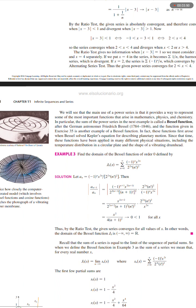Named after the German astronomer Friedrich Bessel (1784-1846), and the function given in exercise 35 is another example of a Bessel function. In fact, these functions first arose when Bessel solved Kepler's equation for describing planetary motion. Since that time, these functions have been applied in many different physical situations, including the temperature distribution in a circular plate and the shape of a vibrating drum head.